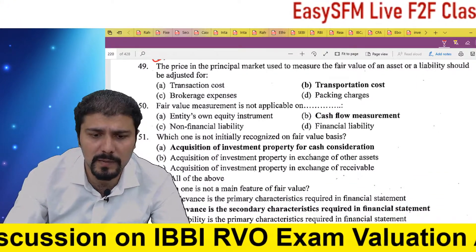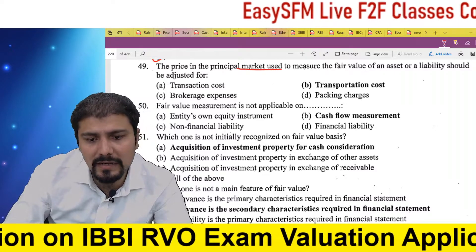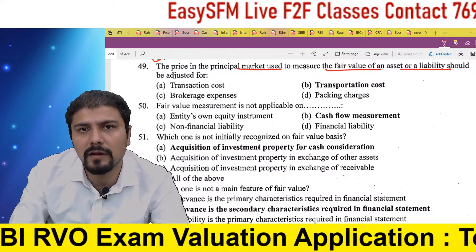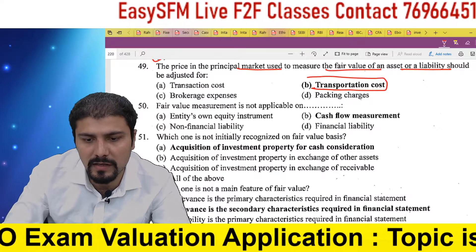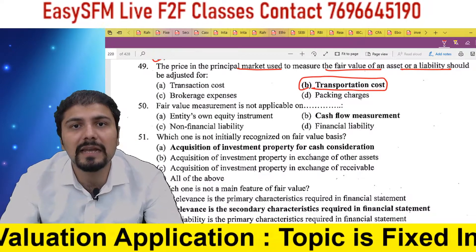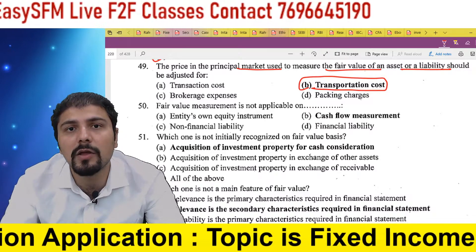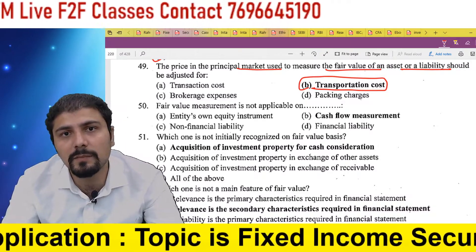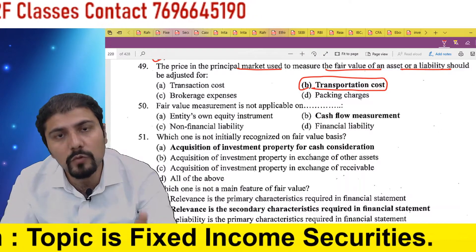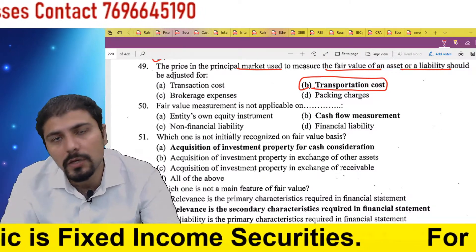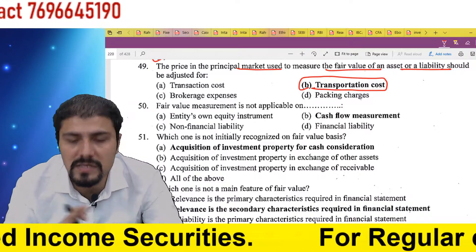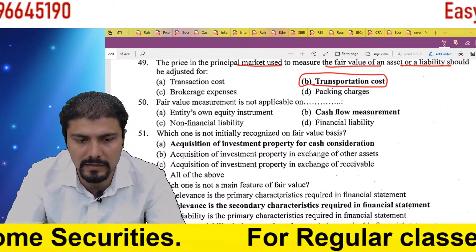This was also covered in Video 1: when deriving fair value using the principal market, subtract transportation cost from the market rate. When identifying the most advantageous market, subtract both transaction cost and transportation cost to check. But even after that, when calculating fair value, transaction cost is never deducted — only transportation cost is deducted.